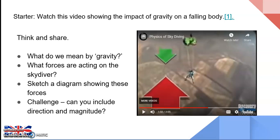Remember that term resultant force — it's the difference between the force acting in one direction and the opposing force acting in the opposite direction. During this time, while the downward force is greater than the upward force, the skydiver is accelerating. That will continue until the force of air resistance pushing upward is equal to the force downward from the acceleration due to gravity. At that point, the skydiver will reach a constant speed.